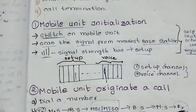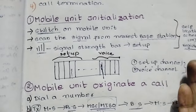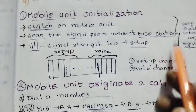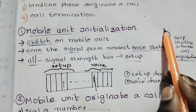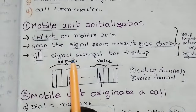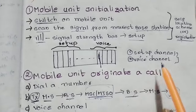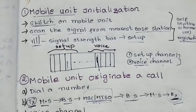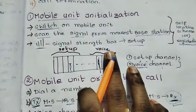First, we are going to switch on the mobile unit. We are going to scan this process. Then we are going to select the self-location scheme or registration. We are going to select the signal and allocate the channel. Or else, the call will be blocked, waiting, or busy. We are going to allocate the channel to complete mobile unit initialization.